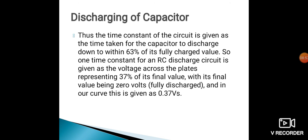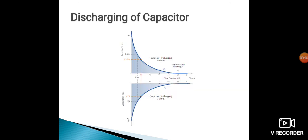With its final value being 0 volts, meaning fully discharged, this is given as 0.37 volts in the RC curve. As you can see, the upper graph shows the reduction of voltage across the capacitor, and the lower graph shows the reduction of current in the circuit. As we have a higher value of voltage, higher will be the discharging current. As the voltage across the capacitor goes on decreasing during discharging, the current also starts decreasing.